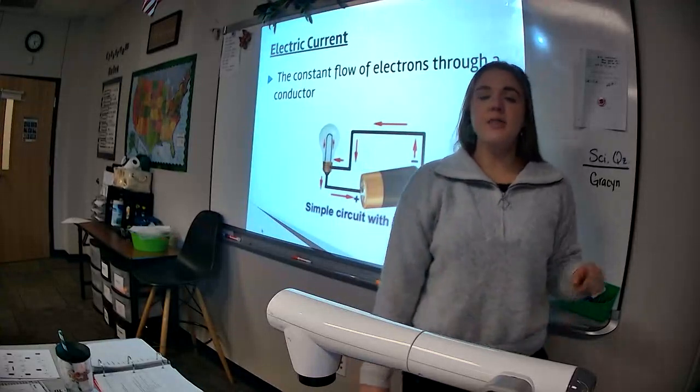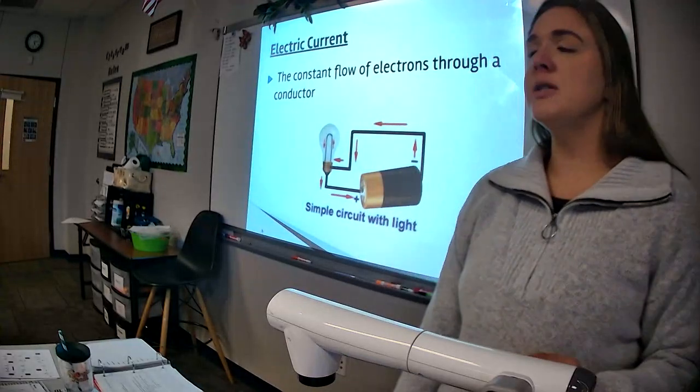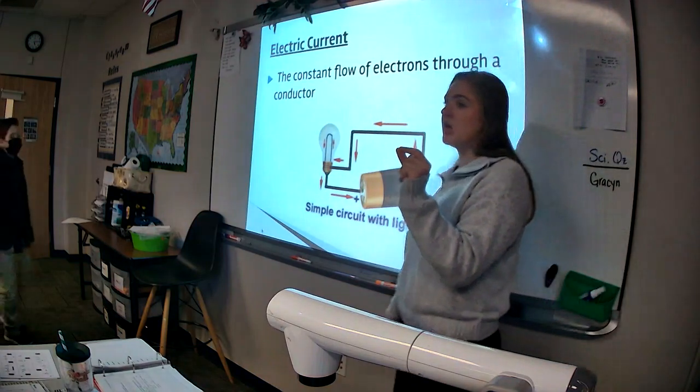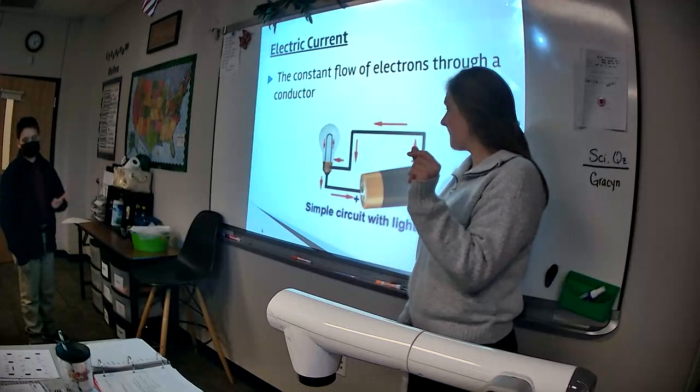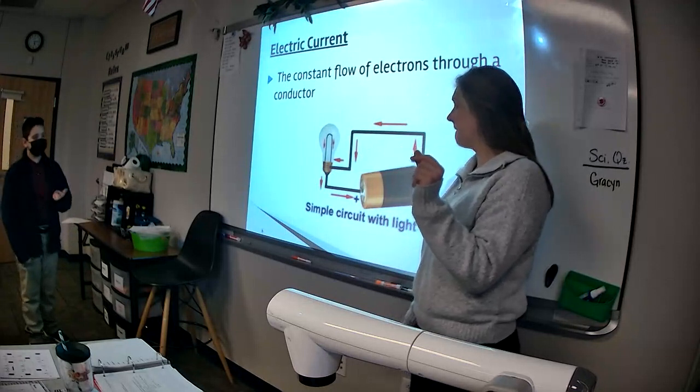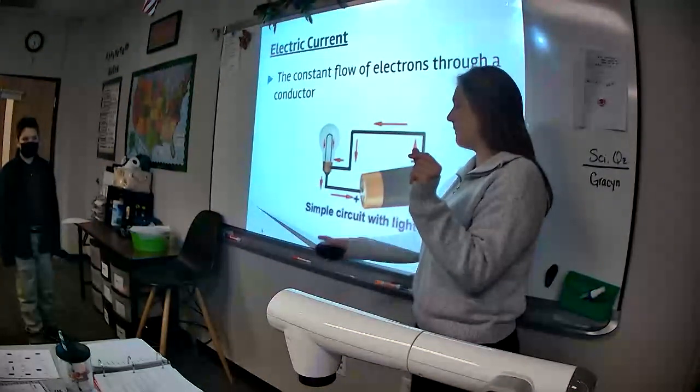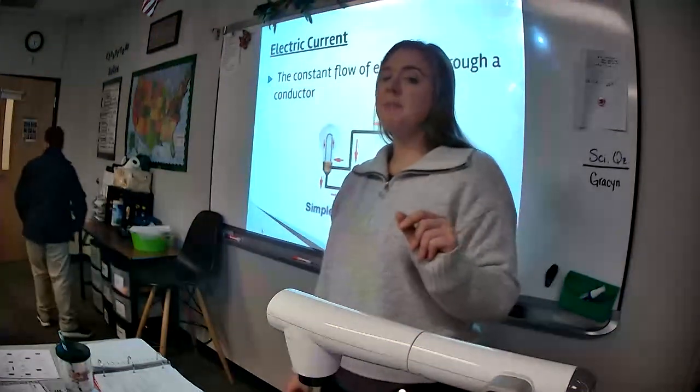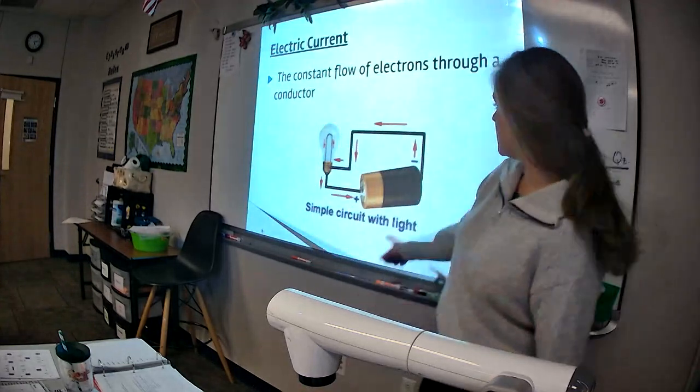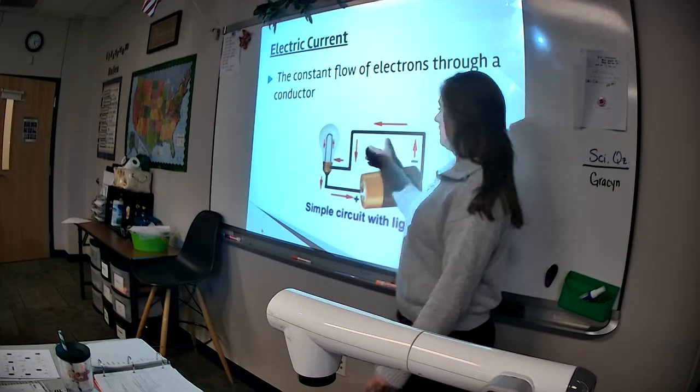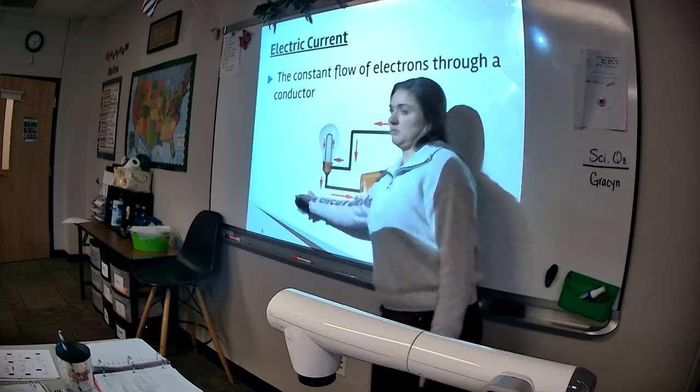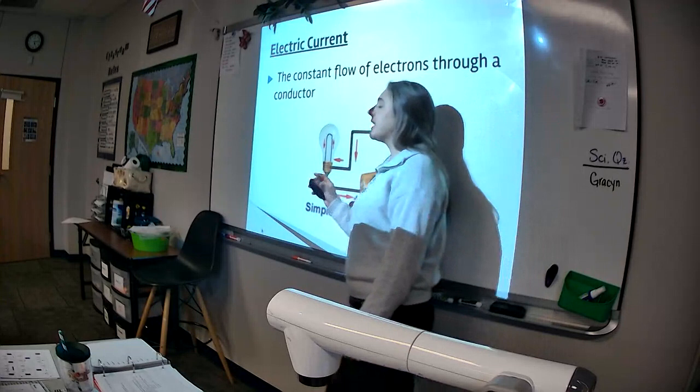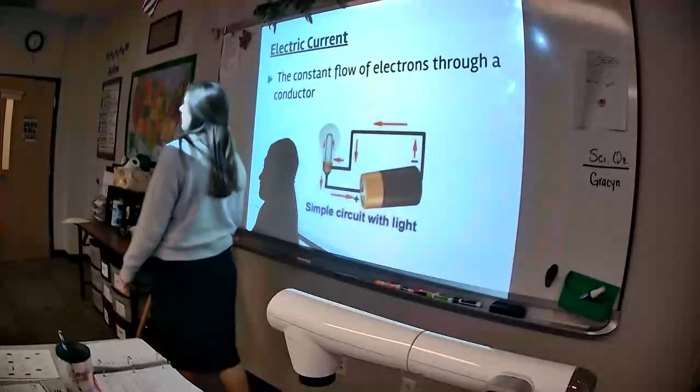So we also talked about the path that electricity will follow with the current. What do we call that path? It could be shaped in different ways. Describe it. What do we call that path? Trinity? A circuit. Good. The circuit is the path the current will flow through.